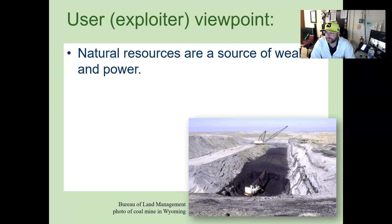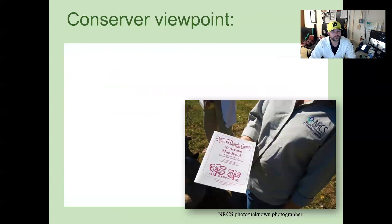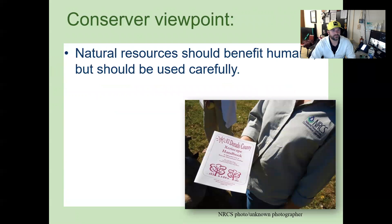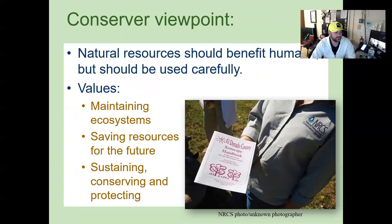The user viewpoint holds that natural resources are a source of wealth and power. The values here place more value in taking and using nature for maximum economic value, but less value in the creatures in the ecosystem. So while we domesticate, we definitely want to leave some of those areas in the ecosystem for animals to thrive. The conserver viewpoint holds that natural resources should benefit humans, but should be used carefully. The values here include maintaining ecosystems, saving resources for the future, and sustaining, conserving, and protecting.